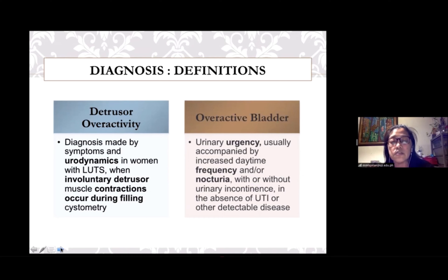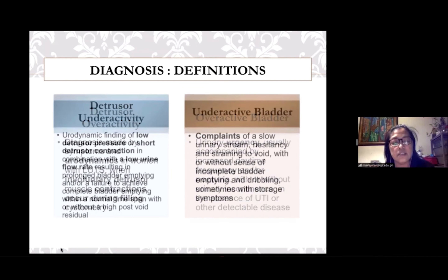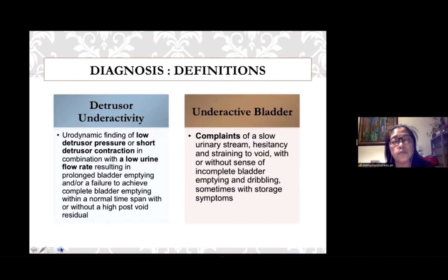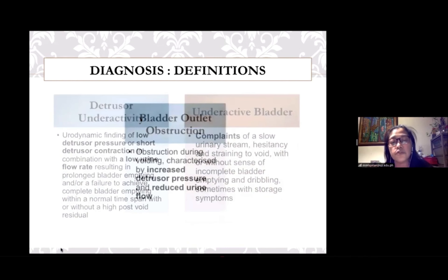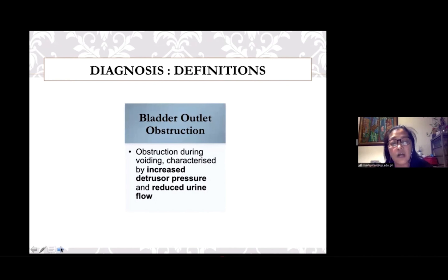On the other hand, the diagnosis of an overactive bladder only requires the presence of symptoms of urgency, frequency, nocturia, and at times urinary incontinence. Similarly, the distinction between detrusor underactivity and the underactive bladder is the need for urodynamic findings on detrusor pressure, detrusor contraction, and flow rate for the former, and just the presence of obstructive complaints for the latter. Bladder outlet obstruction is a urodynamic diagnosis based on findings of increased detrusor pressure and reduced urinary flow.